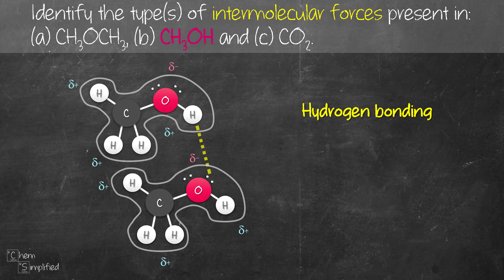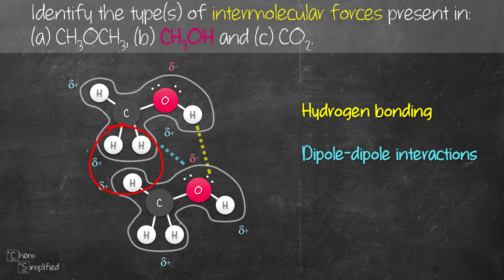Since we do have an electronegative atom — oxygen — that creates a partial negative charge on that part of the molecule, and the rest of the molecule is partially positive, there is a permanent dipole within each methanol molecule. The attraction between the opposing delta positive and delta negative charges is the dipole-dipole interaction. There are also nonpolar parts of the molecule, like the hydrogens, that have a weak interaction between the two methanol molecules — called London dispersion force, which is present in basically all substances. So in all, methanol has three intermolecular forces: hydrogen bonding, dipole-dipole interaction, and London dispersion forces.